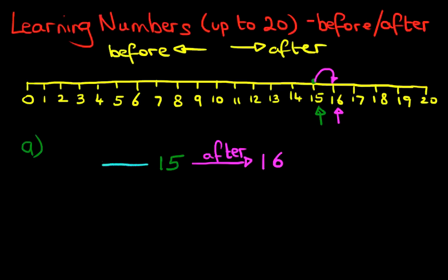And on this side we're going to work out the number before fifteen. Now again we look at fifteen and we're going to go back one. There we go. We've gone back one and the number is fourteen. So the number before fifteen is fourteen.